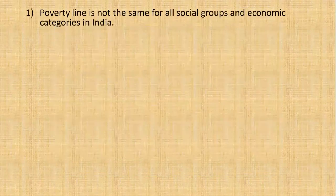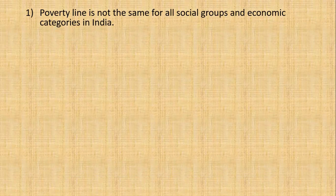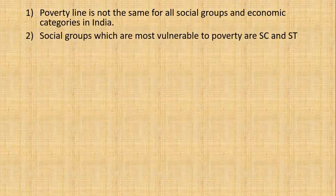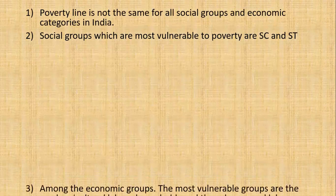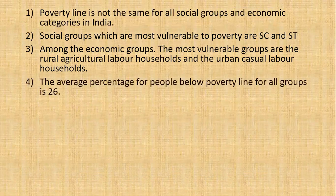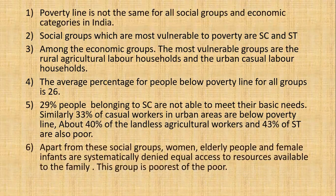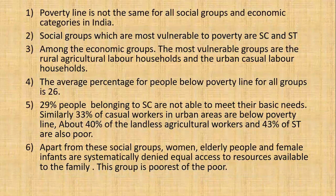Looking at an overview of the topic: the poverty line is not the same for all social groups and economic categories in India — it differs group to group and by economic status. The social groups most vulnerable to poverty are scheduled castes and scheduled tribes. The economic groups most vulnerable are rural agricultural laborer households and urban casual laborers, with an average poverty percentage of 26%. Apart from these, women, elderly people, female infants are systematically denied equal access to resources available to the family — this group is the poorest of the poor.